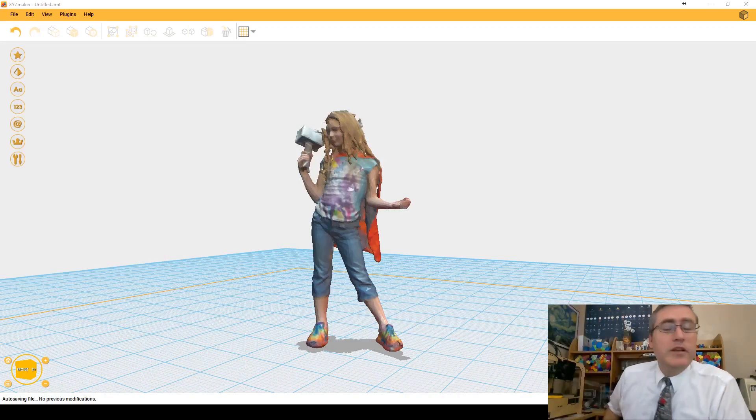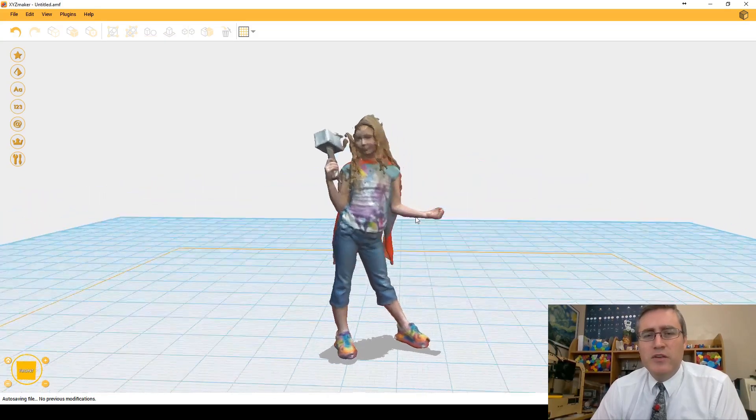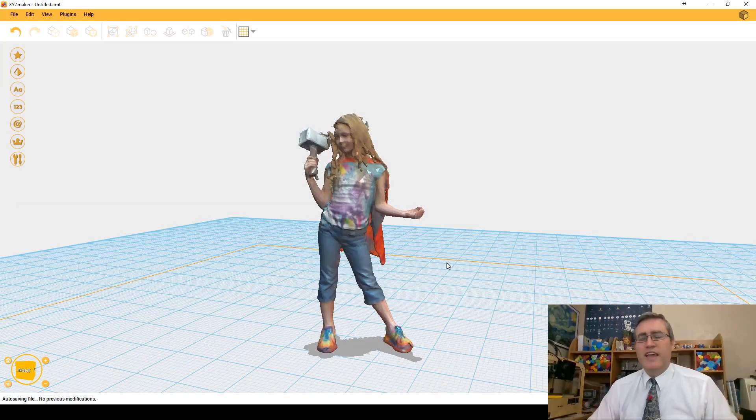So once I got it all back together, went through the whole calibration process again, made sure that everything was neat and tidy, and it went much faster the second time. And then I fired up XYZ Maker again and threw a 3D model at it. And this is the 3D model that I threw at it. This is a 3D scan of a young lady that I took who had Thor's hammer and a really cool cape on. There's a problem with the scan. It took a big chunk out of her head, but I wasn't going to worry about that. I just decided I was going to take this scan as is, throw it at the printer and see what happened.